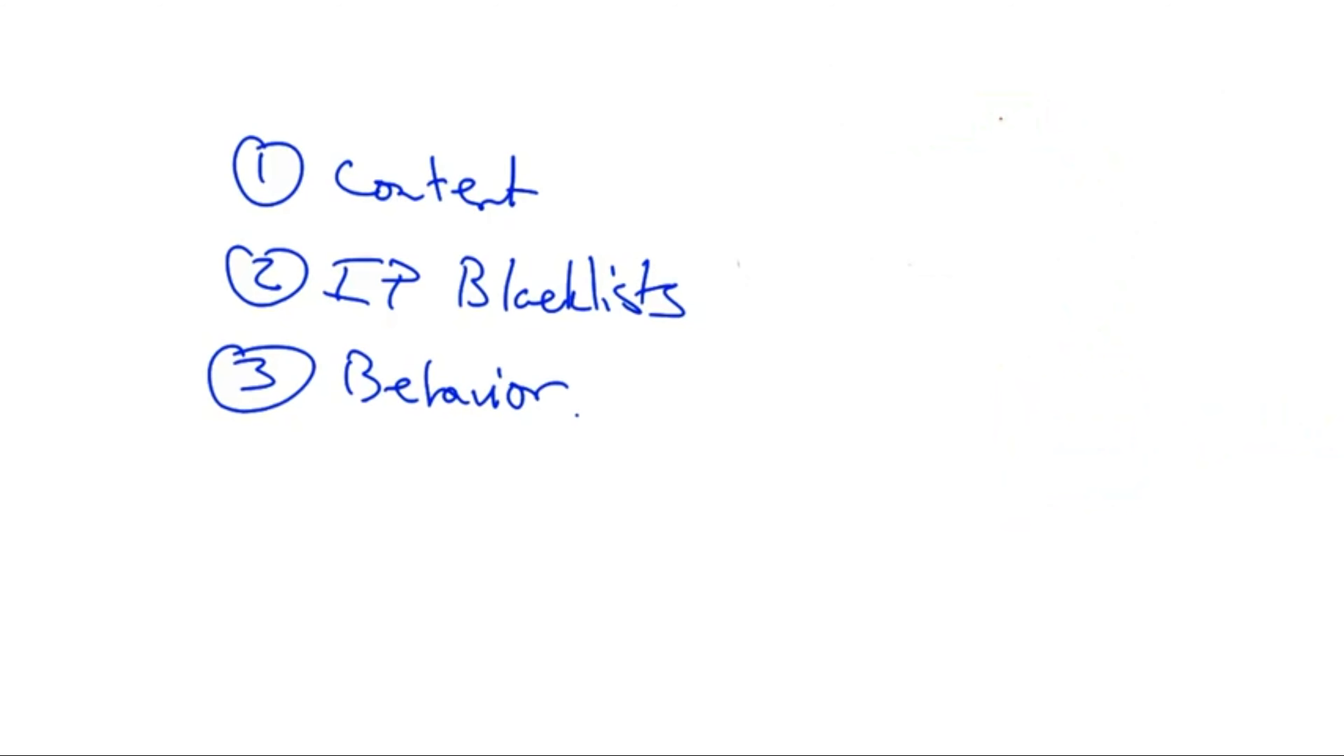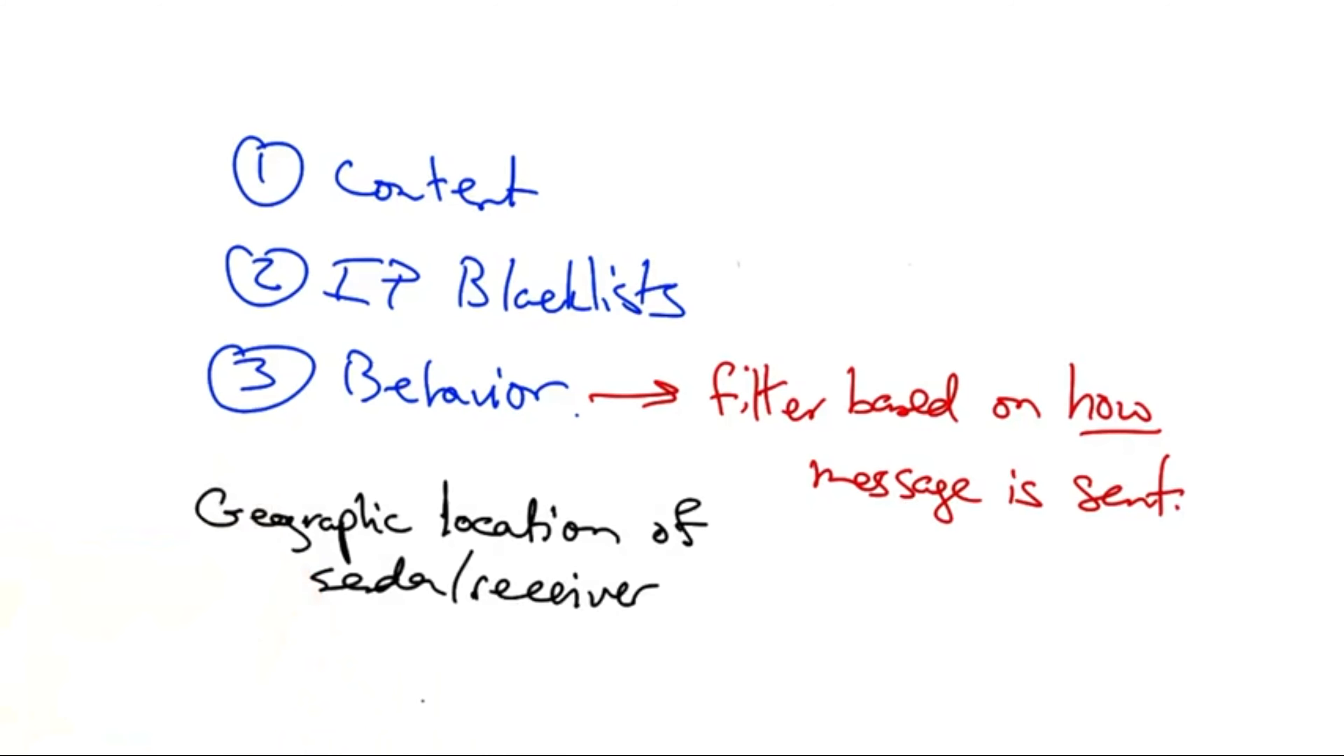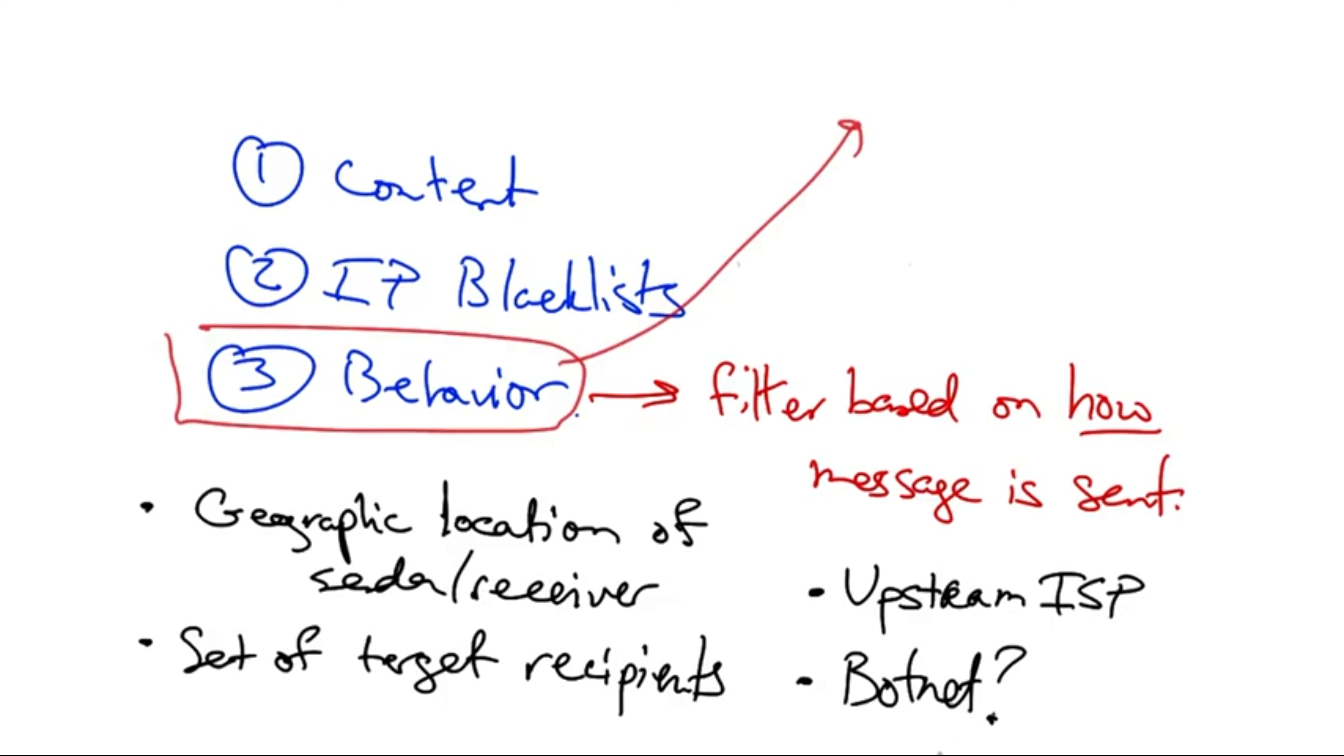The third approach is to filter a message on how it is sent. In particular, we can look at such features as the geographic locations of the sender and receiver, the set of target recipients, the sender's upstream ISP, or our inference as to whether the sender is a member of a botnet, or a network of compromised hosts that are doing the bidding of some command and control server.